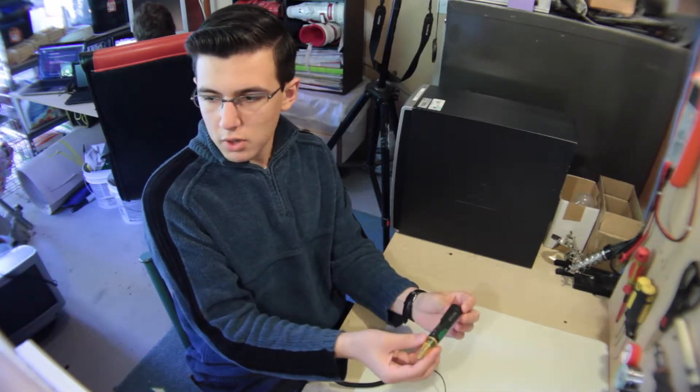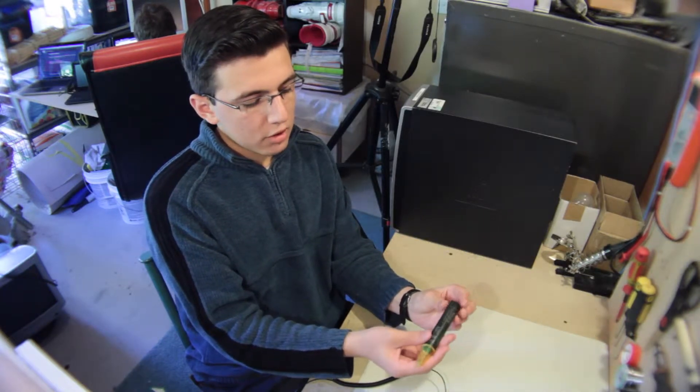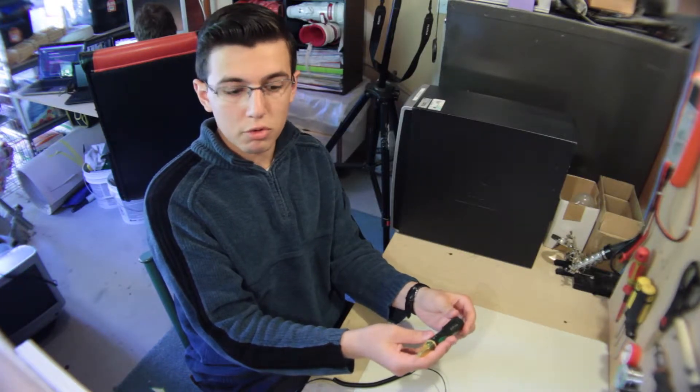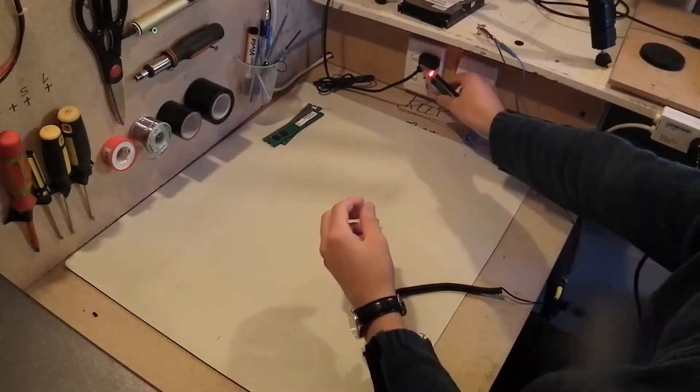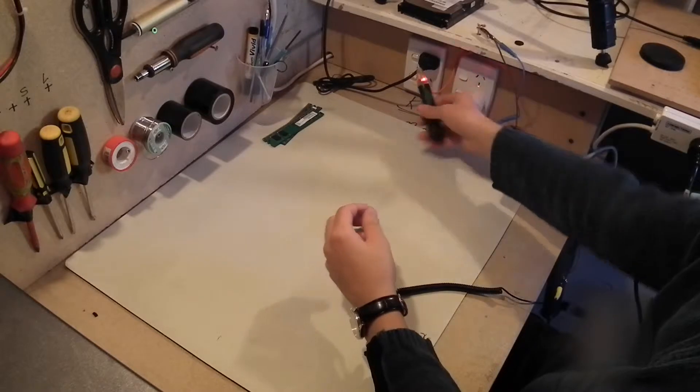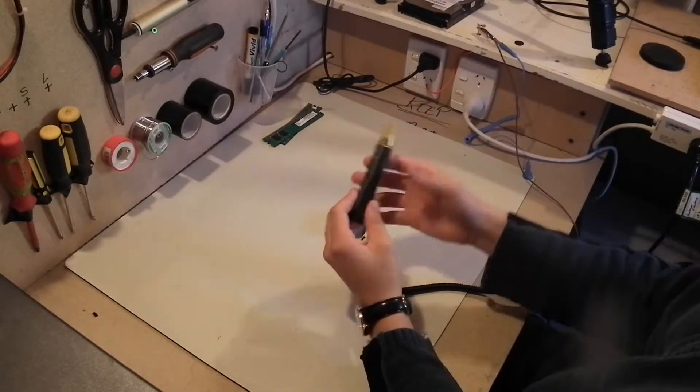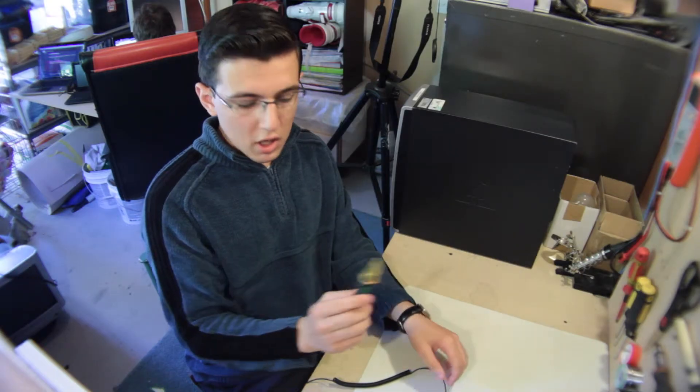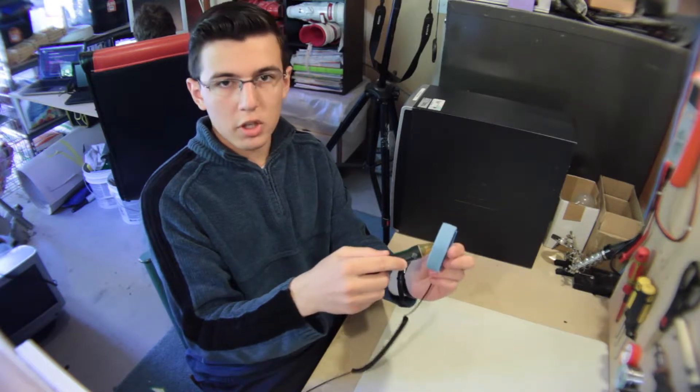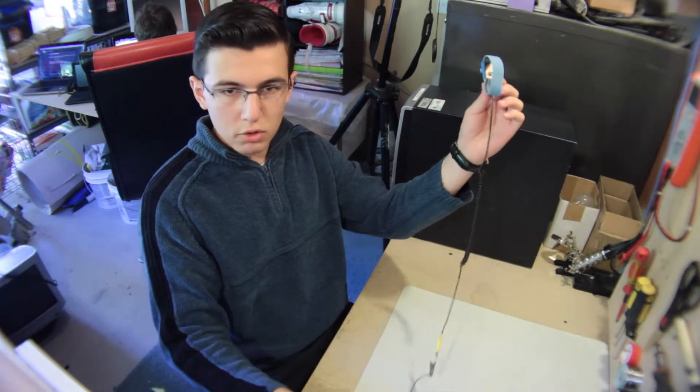So basically I've got here as well just a tester to see whether there's electricity flowing through something. And as an example I'm going to just put it in there so you can see. So that's right on the power, so there's definitely power going through there. However, there's no power when I put it in here, so therefore this means it's safe to use.